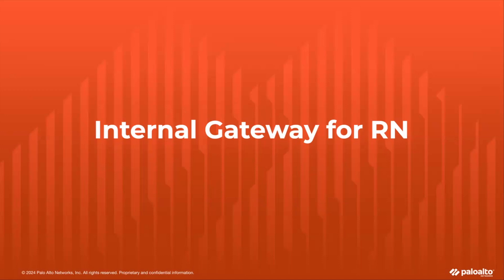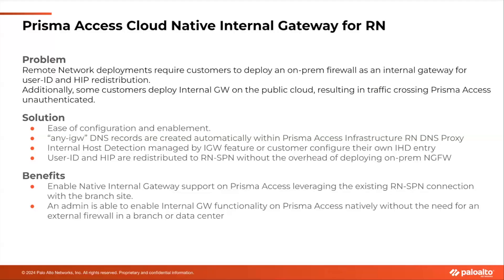Now I'm going to move to the internal gateway for remote networks. When a customer deploys a remote network and wants to distribute user ID and HIP reports, that normally leads to overhead when deploying or reusing on-premises firewalls as the internal gateway. Some customers find this really complicated, and if customers deploy the internal gateway on the public cloud, that results in traffic crossing Prisma Access unauthenticated.